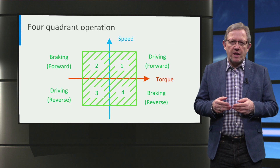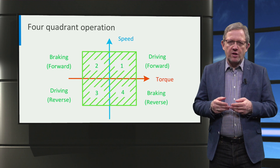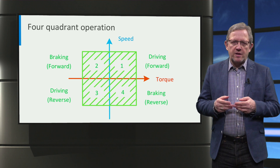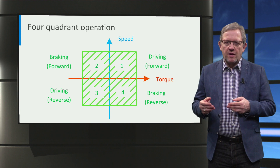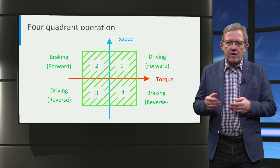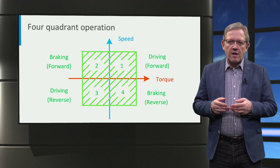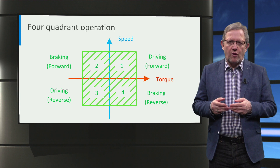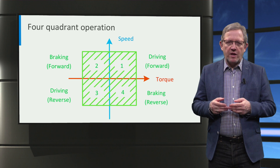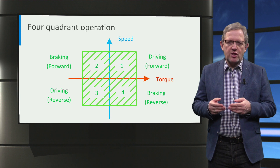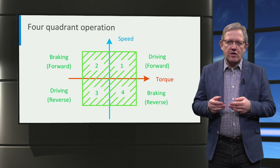Let us look deeper into the bidirectional power flow operation of the power converters and motors in an electric car. Any car needs the ability to both drive and brake in the forward and reverse direction. This can be represented using the four-quadrant torque-speed characteristics. The four quadrants from 1 to 4 correspond to driving in the forward direction, braking in the forward direction, driving in the reverse direction, and braking in the reverse direction respectively.